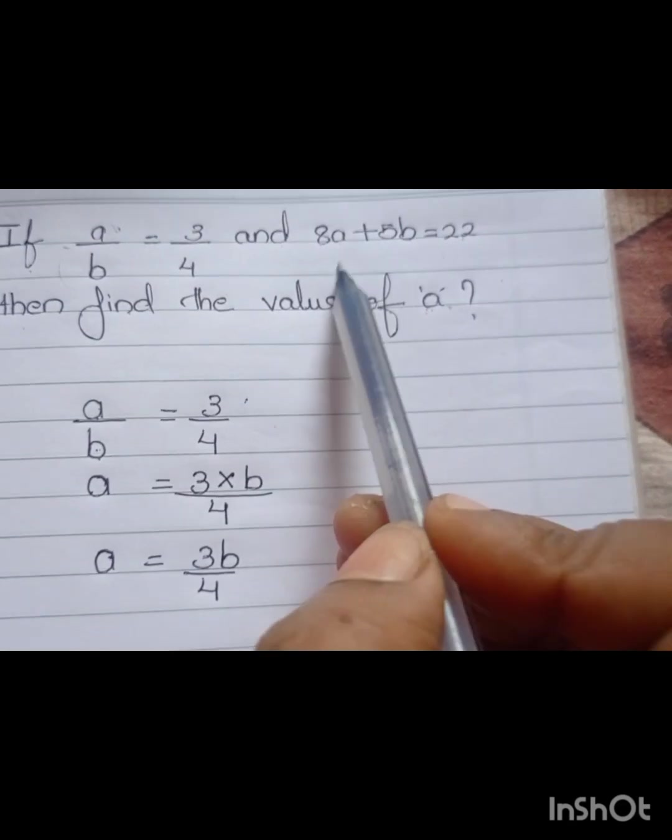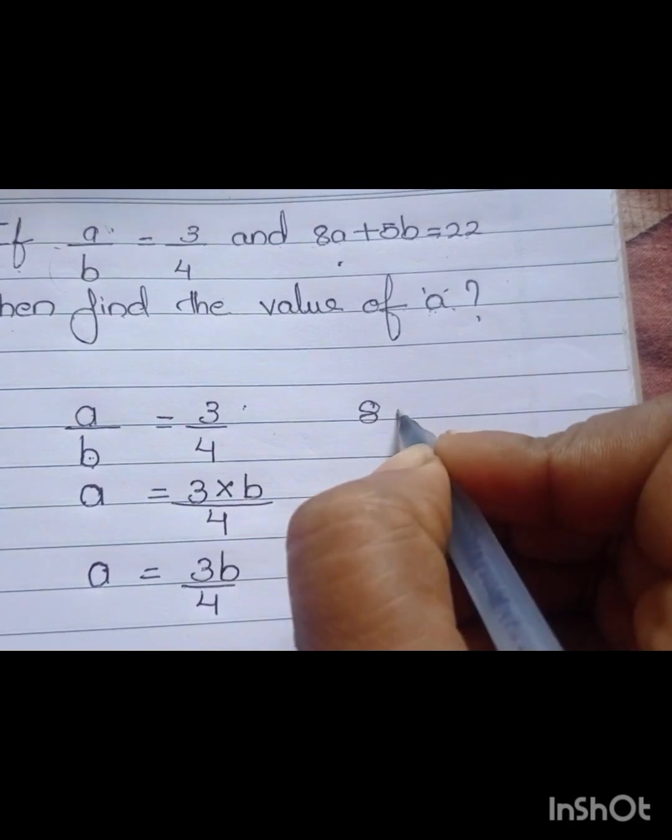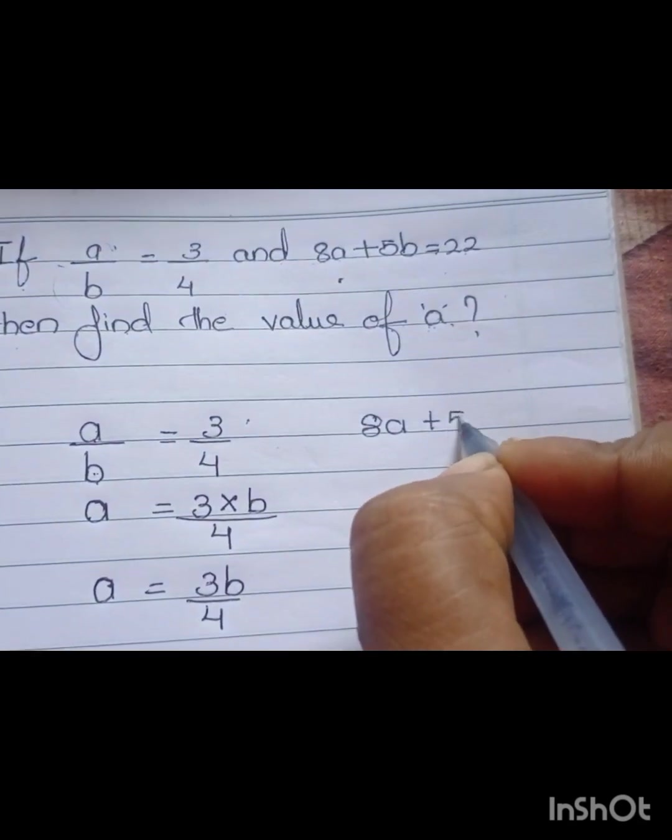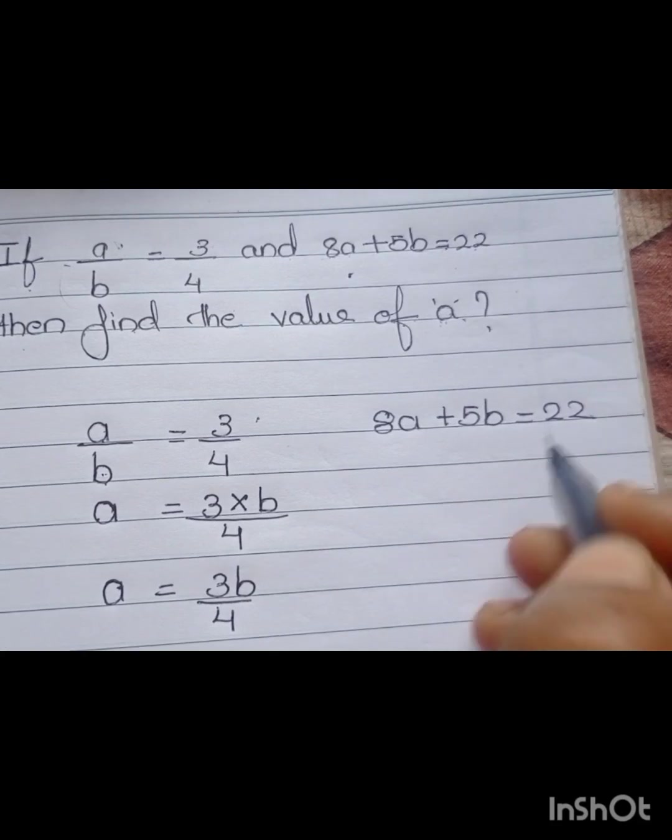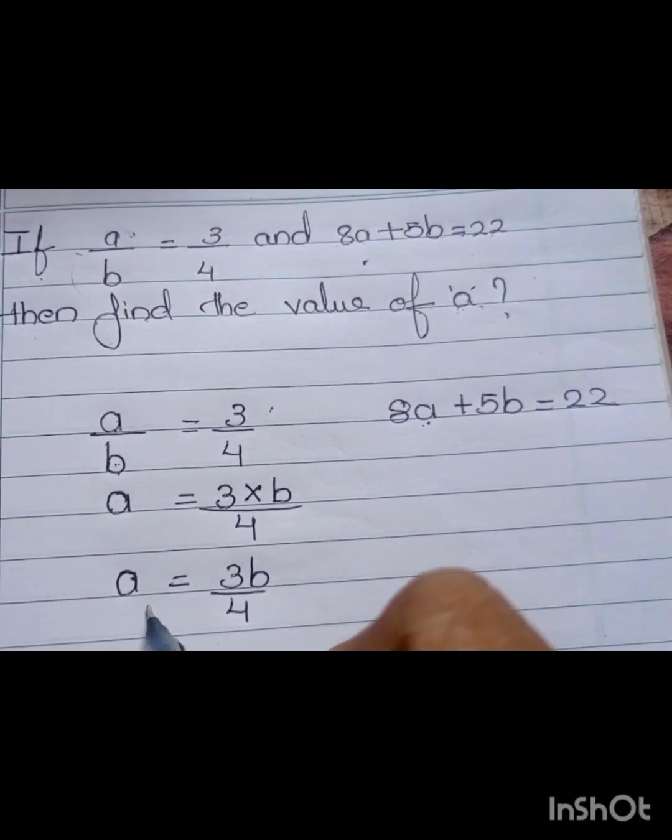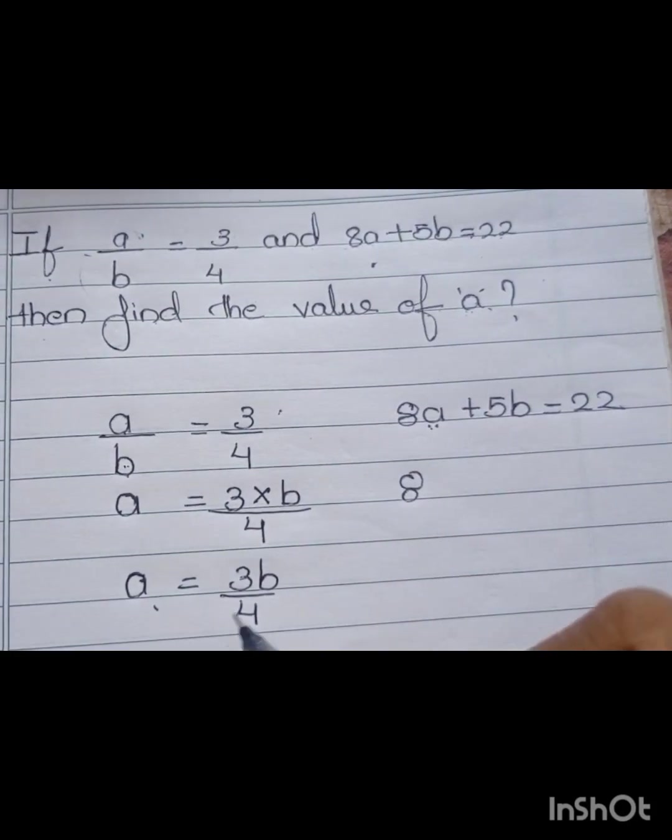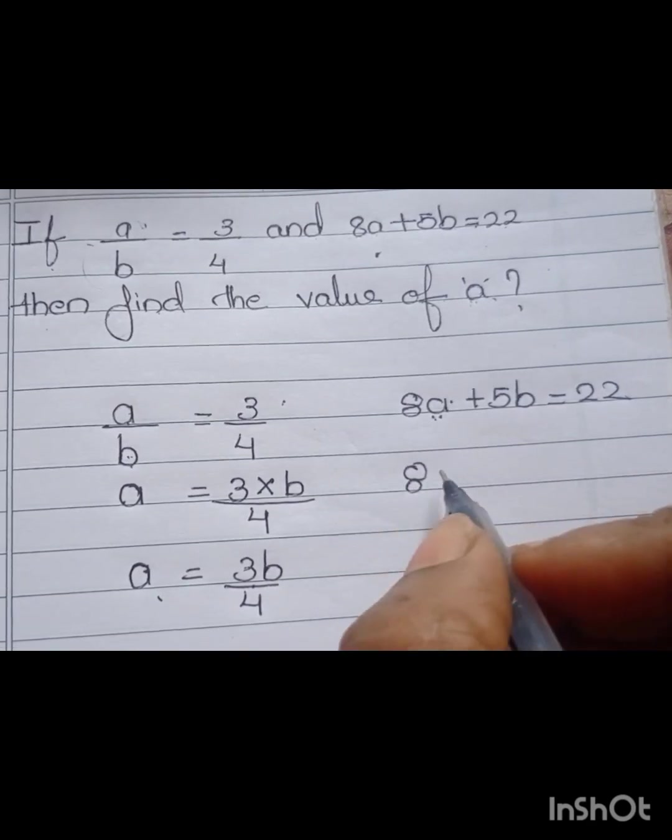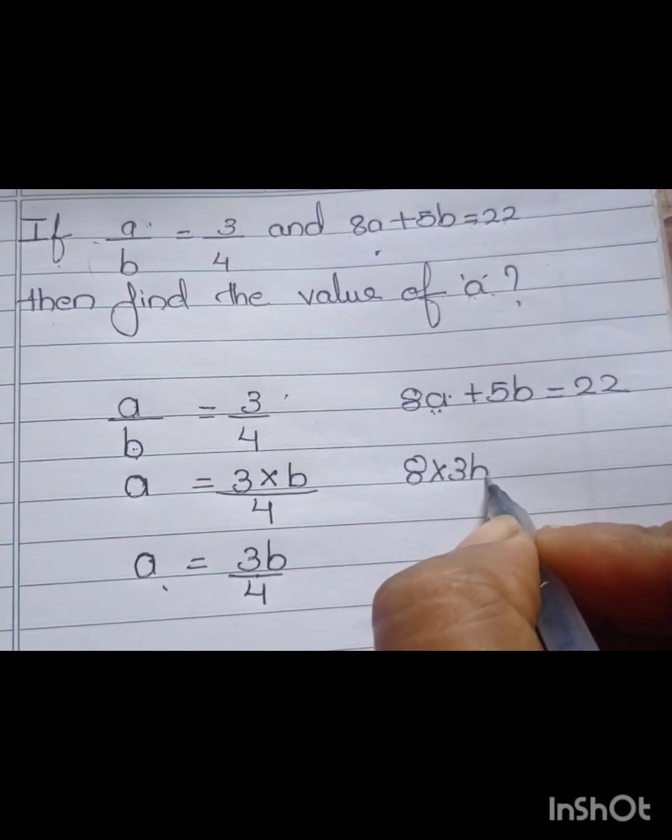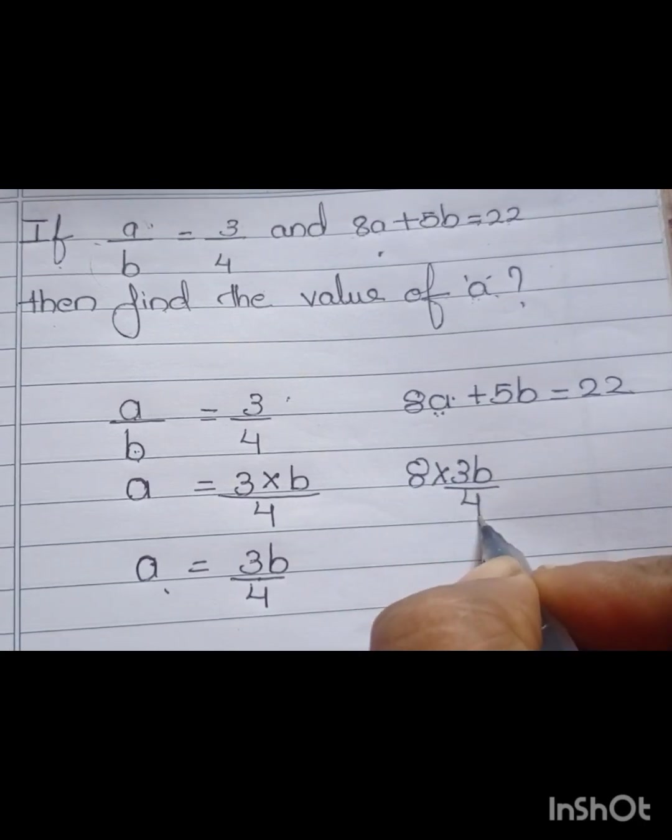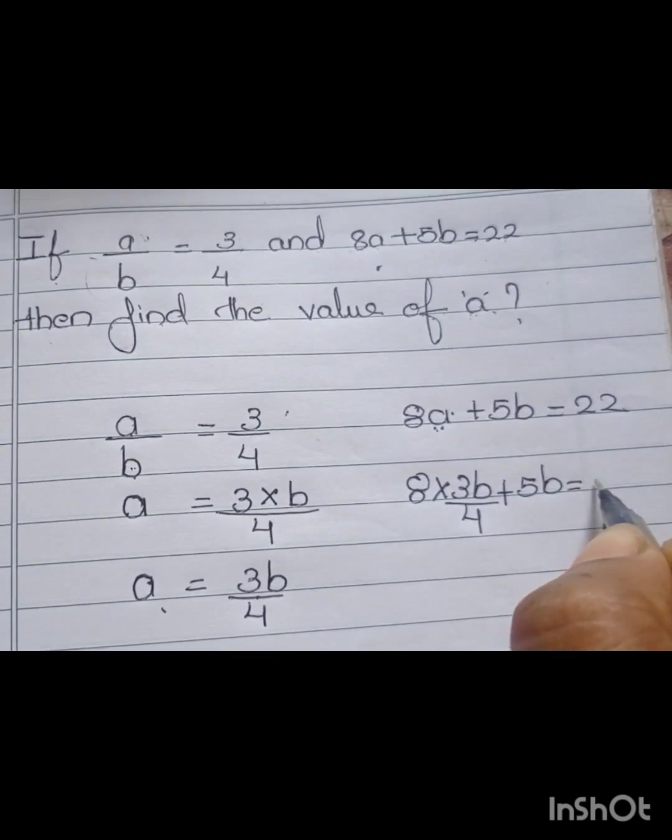Next, we are going to find B from this equation. We got 8A plus 5B equal to 22. We know that A is 3B by 4. So, we are going to write 8 into 3B by 4 in the place of A. 8 into 3B by 4 plus 5B equal to 22.